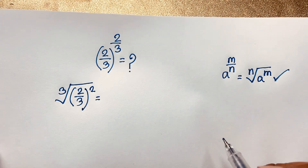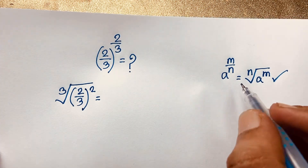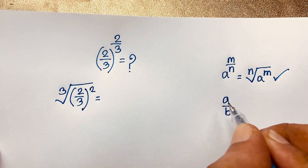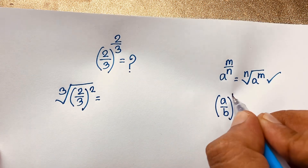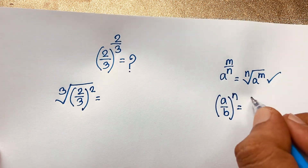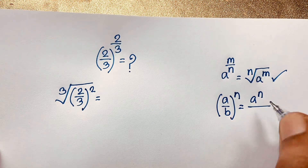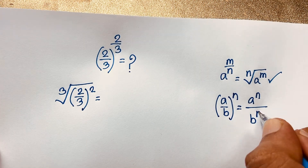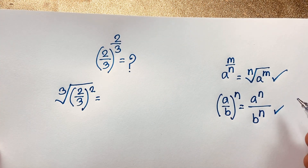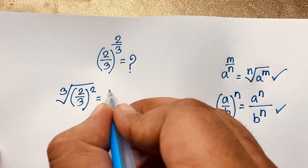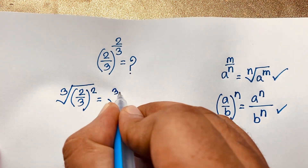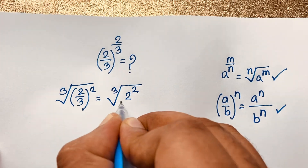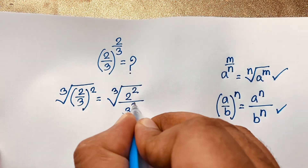Now, we know the exponential formula: a over b, whole to the power n, equals a to the power n over b to the power n. If I apply this formula here, this expression will be the cube root of 2 to the power 2, over 3 to the power 2.